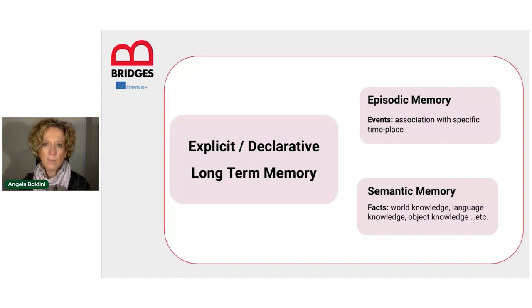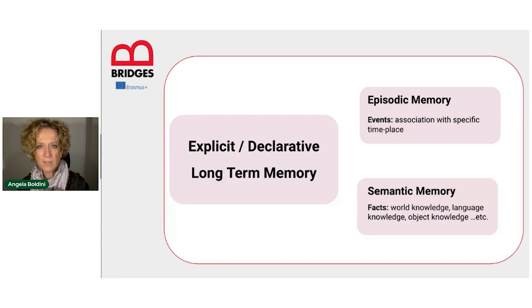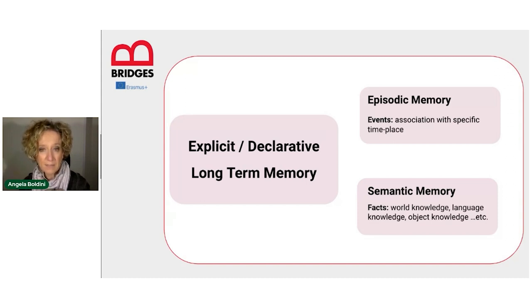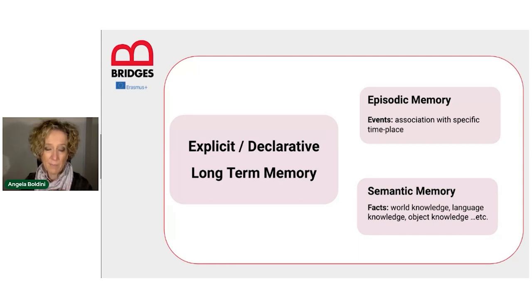Semantic memory is memory for the things we know, the facts we are aware of. It's sometimes presented as our mental encyclopedia. For example, knowing that Berlin is the capital of Germany is semantic memory, but remembering a visit to Berlin or remembering being taught that Berlin is the capital of Germany is an example of episodic memory.